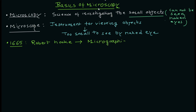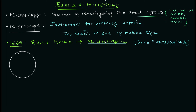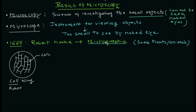The first important contribution was made by Robert Hooke. He published his results in Micrographia, where he was exploring plant and animal material under his microscope. He designed a sophisticated microscope and investigated plant material. Inside that material he found compartments — different sections — and he called those sections 'cells.' That is where today's term 'cell' — plant cell, animal cell, bacterial cell — came from.